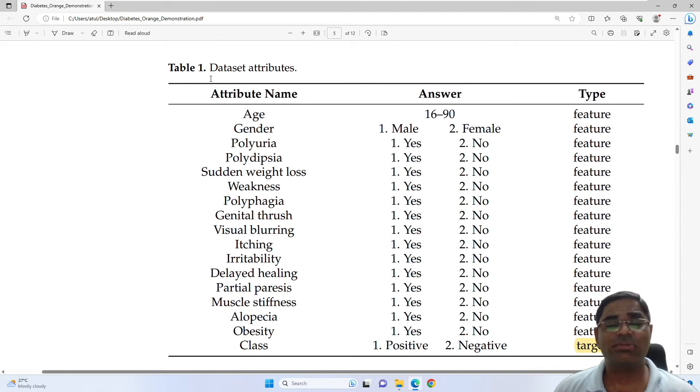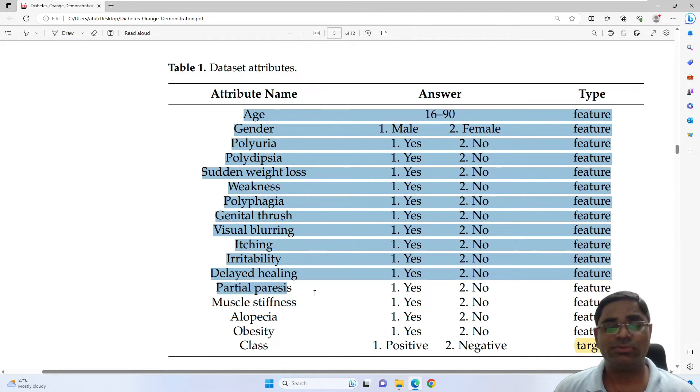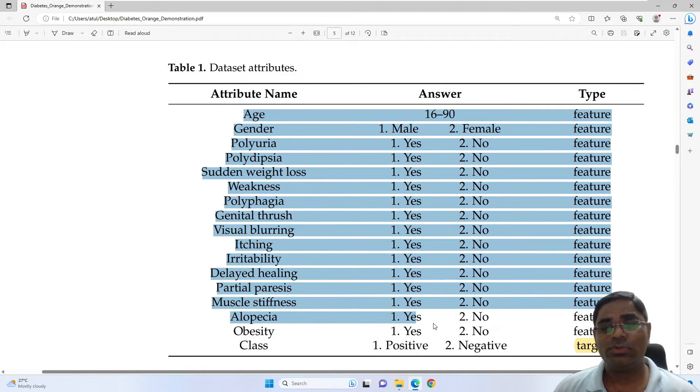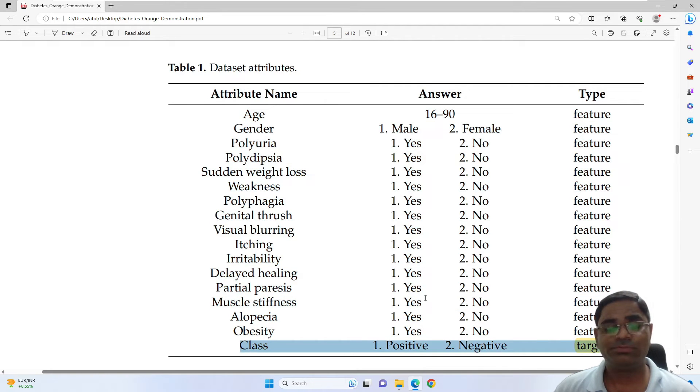Here the article summarizes the dataset attributes. So as mentioned earlier, there are 16 types of attributes that are being used to diagnose if a particular case is positive or negative for diabetes. So these 16 attributes would be of type feature, and as we can see in the 17th row, there is a class that is positive or negative for diabetes. Its type would be target.